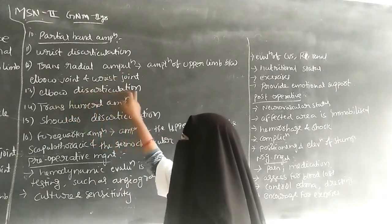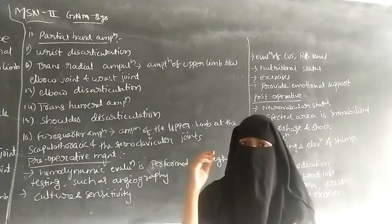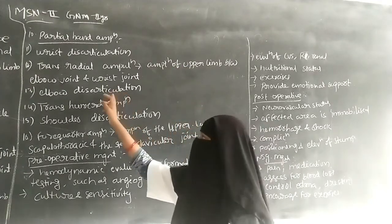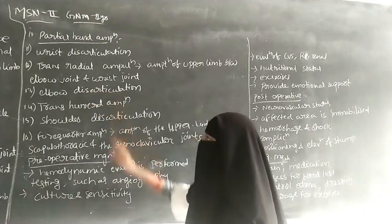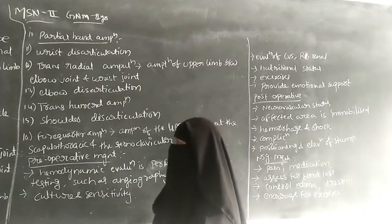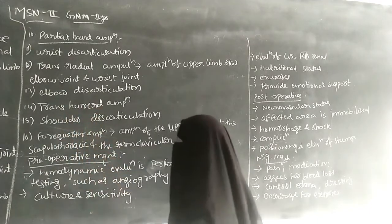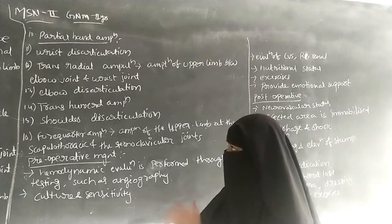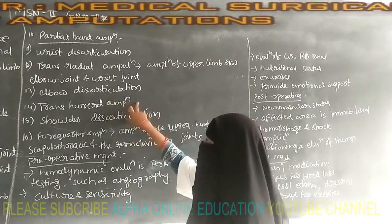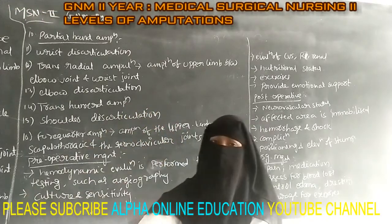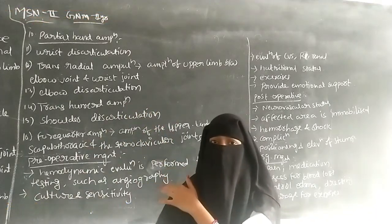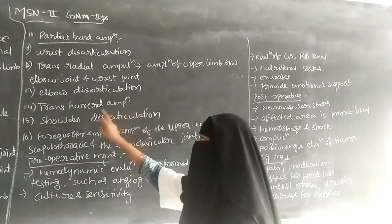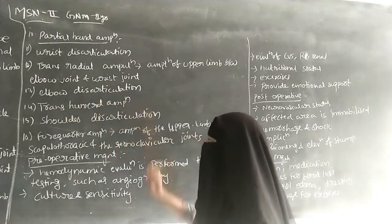Next is elbow disarticulation, where up to the elbow the limb has to be removed. After that is transhumeral amputation, where the amputation is done between the elbow joint and the shoulder joint — the limb between these joints is removed in transhumeral amputation.